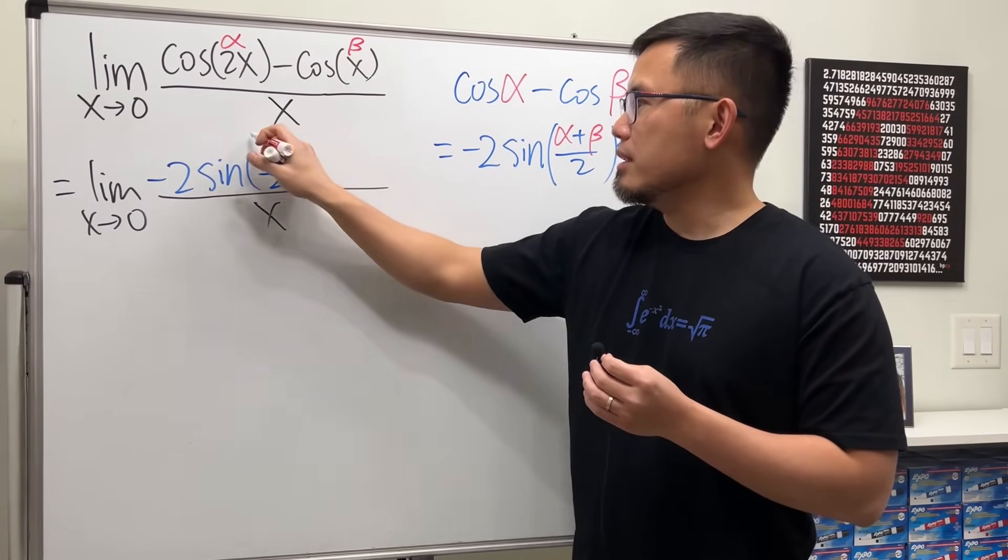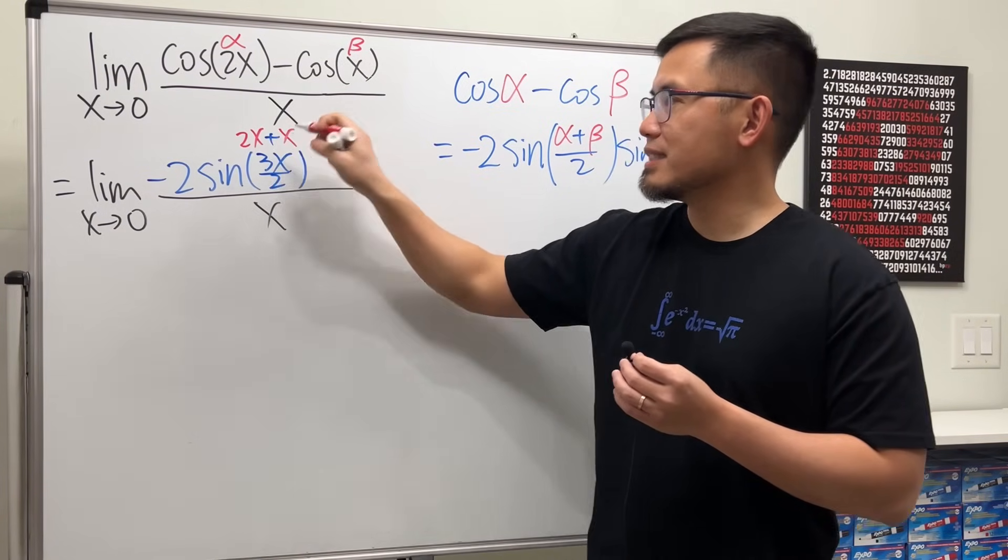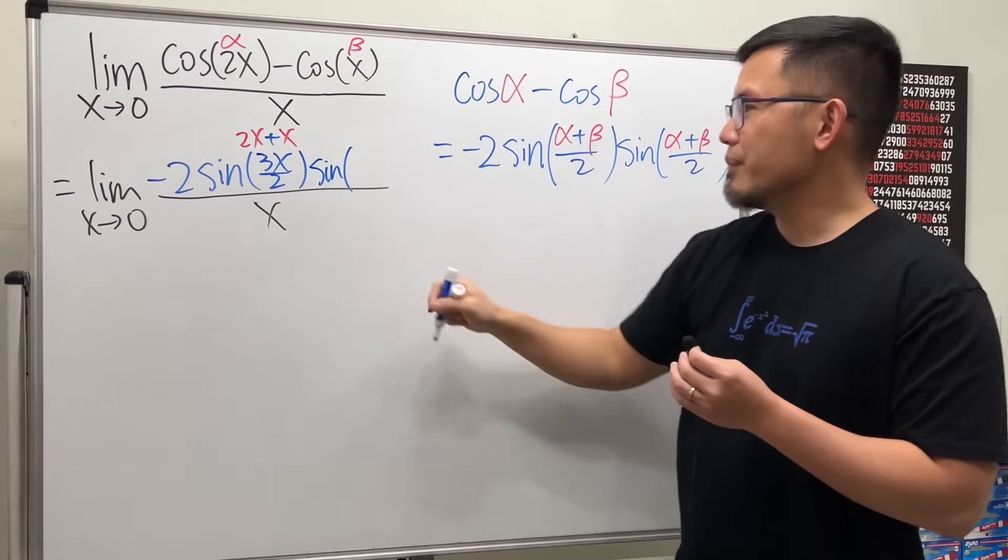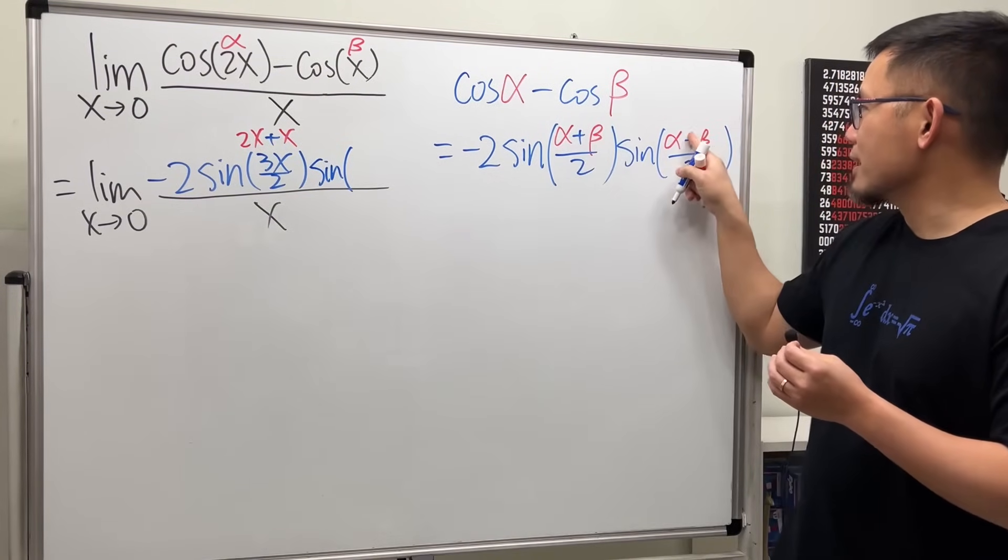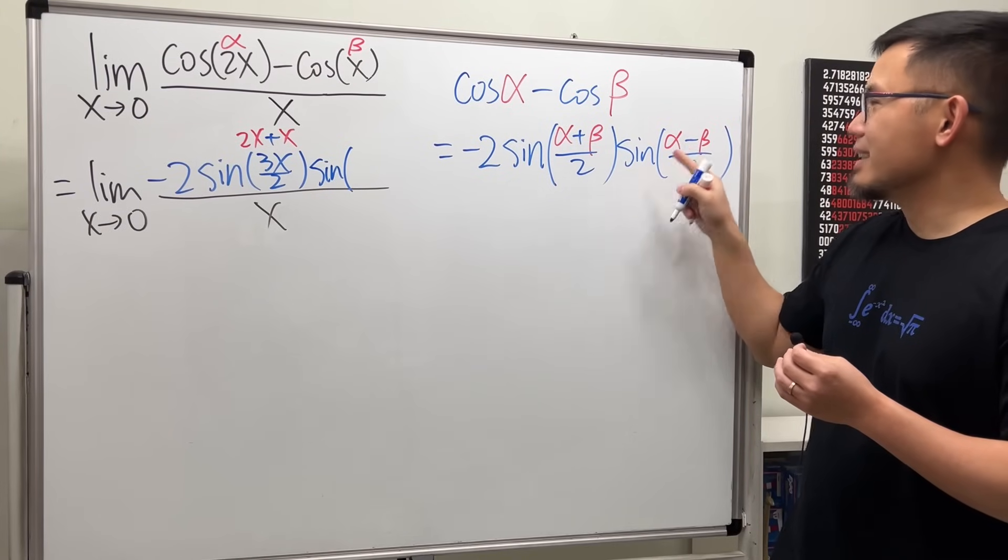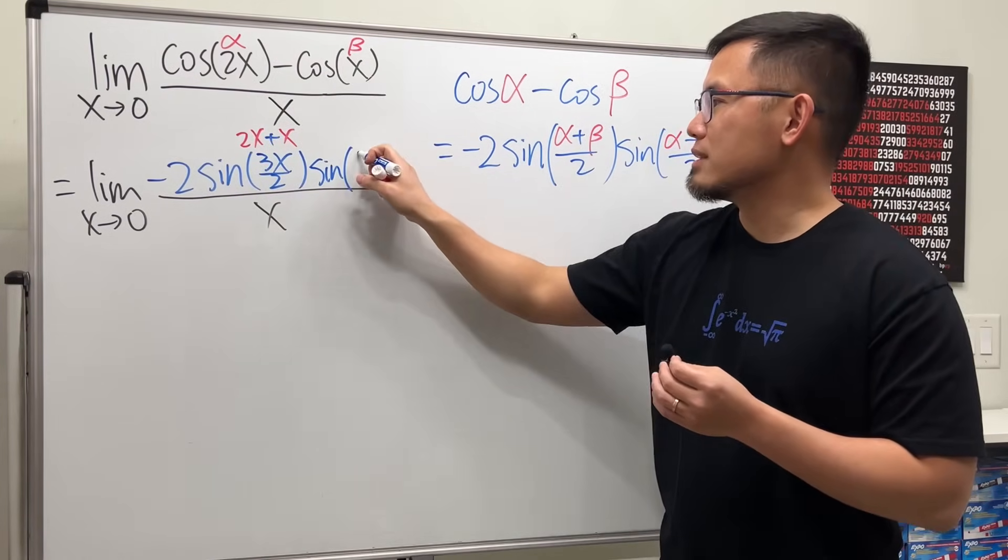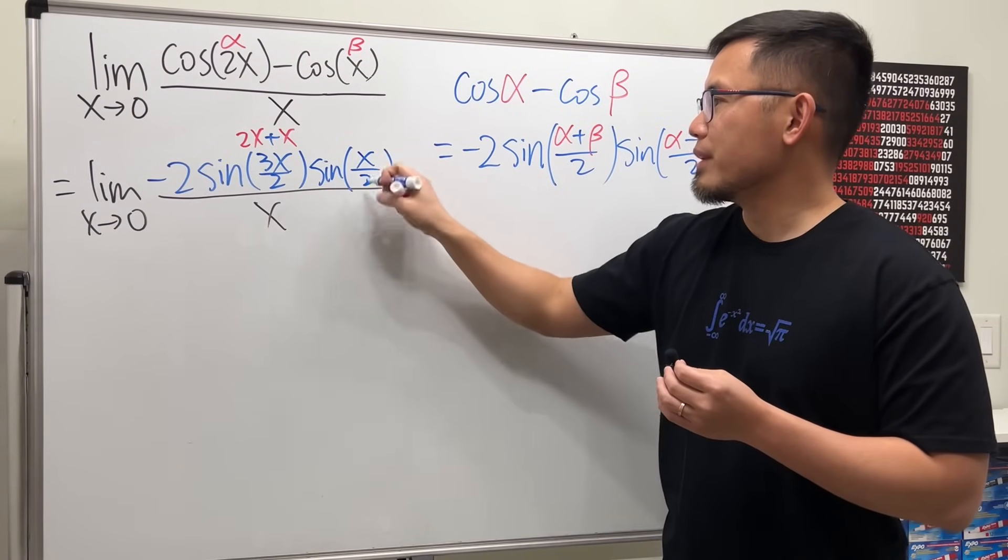Again, 2x plus x. And then one more, we have sine of alpha minus beta. Sorry, this right here should be a minus. So 2x minus x, that will give us x over 2. So again, 2x minus x.